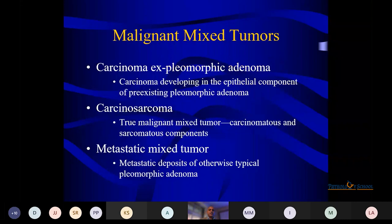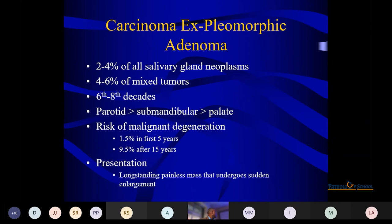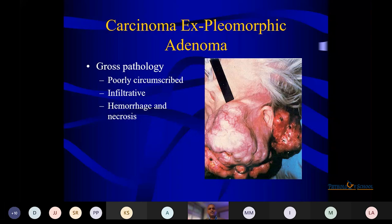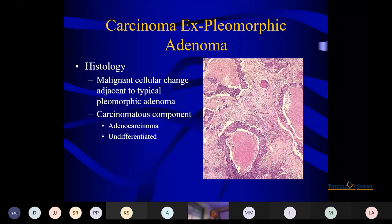Mixed tumors include carcinoma ex pleomorphic adenoma, carcinosarcoma, and metastatic mixed tumors. Carcinoma ex pleomorphic adenoma is 2–4% of all salivary gland tumors. The parotid is the most common site, followed by submandibular and palate. 95% have a history of long-standing pleomorphic adenoma — the patient was diagnosed 10–12 years back and then presents with increased or recurrent swelling. On gross: irregular, infiltrative, hemorrhagic with necrosis. Histologically, malignant cellular changes are seen adjacent to the pleomorphic adenoma component — necrosis, epithelial atypia, and islands with mass necrosis.